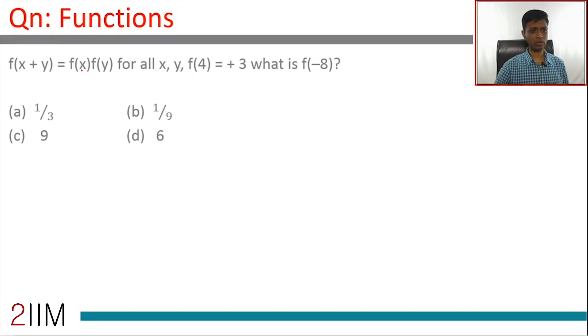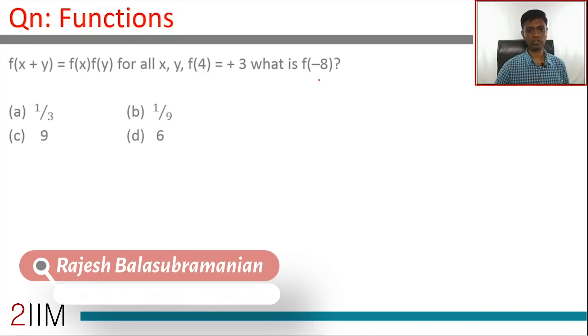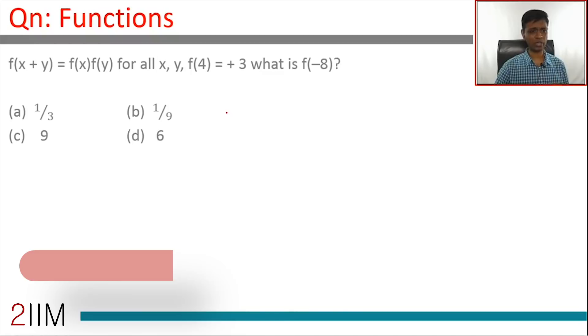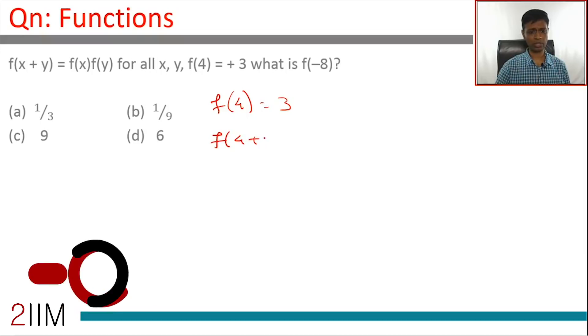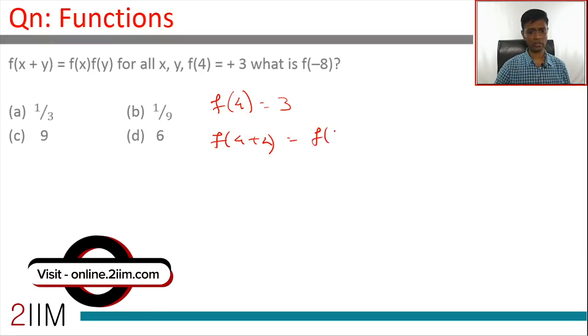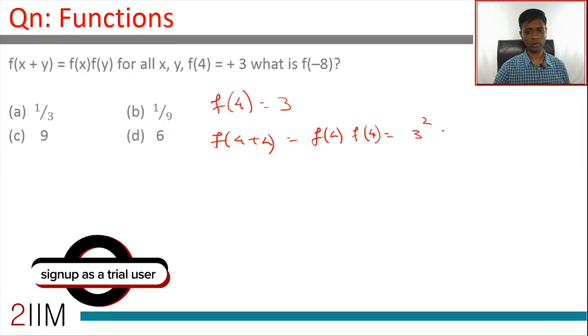We're told that f of x plus y equals f of x into f of y for all x, y. f of 4 is plus 3, what is f of minus 8? Again, a very good question because it's unconventional. There's no template method of solving this. I'm going to have a play here. f of x plus y is f of x into f of y. We know f of 4 is 3, let's say f of 4 plus 4 is f of 4 into f of 4, which is 3 square, which is 9. So we know that f of 8 equals 9.